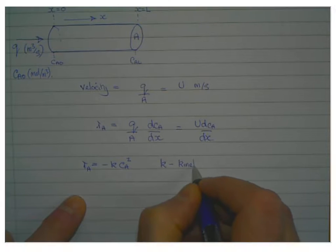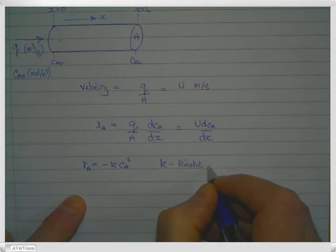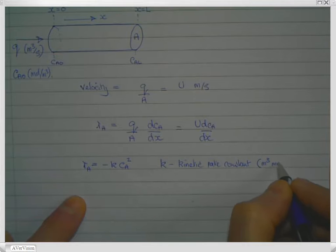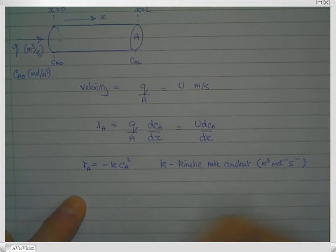And in this case, K is the kinetic rate constant. And because it's a second-order reaction, the rate constant has units of meters cubed, moles to minus one, seconds to minus one, like one over concentration per second.